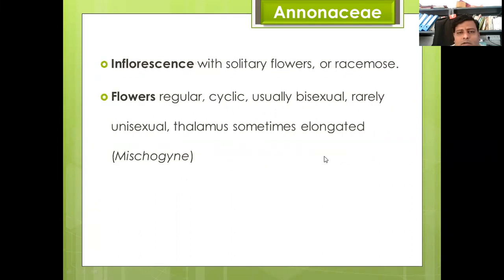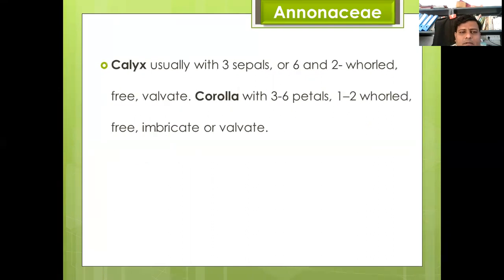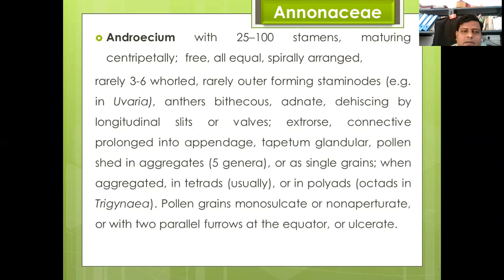Inflorescence is solitary flower or racemose. Flowers are regular, cyclic, usually bisexual, rarely unisexual; thalamus sometimes elongated. Calyx usually with three sepals or six in two whorls, free, valvate. Corolla with three to six petals in one to two whorls, free, imbricate or valvate.